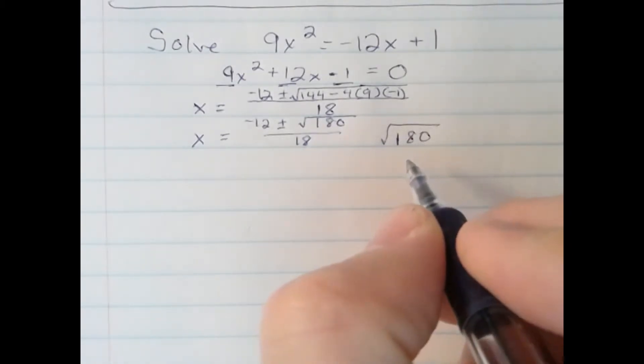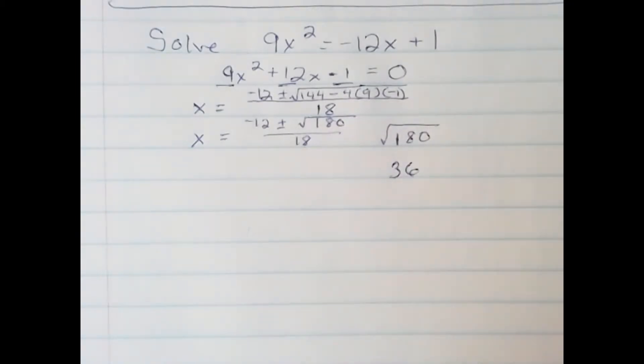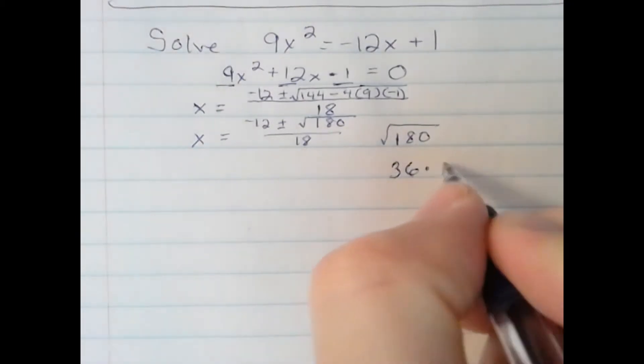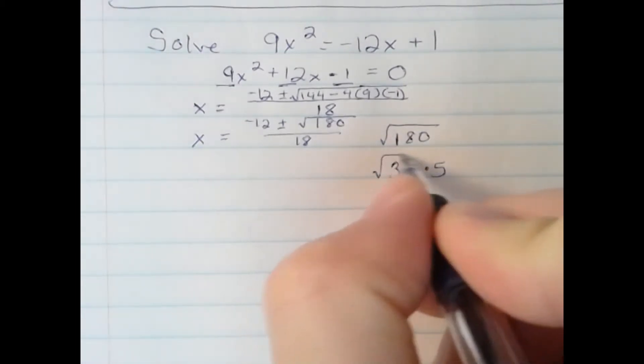It turns out 36 is. 36 is a perfect square. If I take 36 times 5, I will get 180.